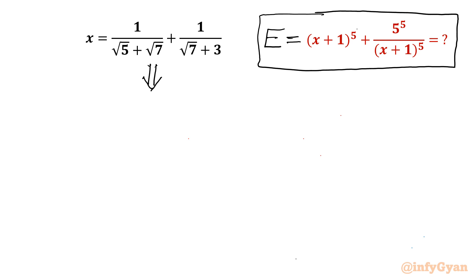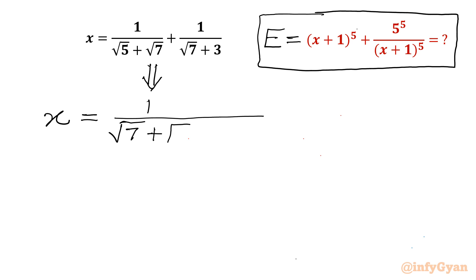So I will write x equal to 1 over (√7 + √5), and the second term I will write as 1 over (3 + √7).